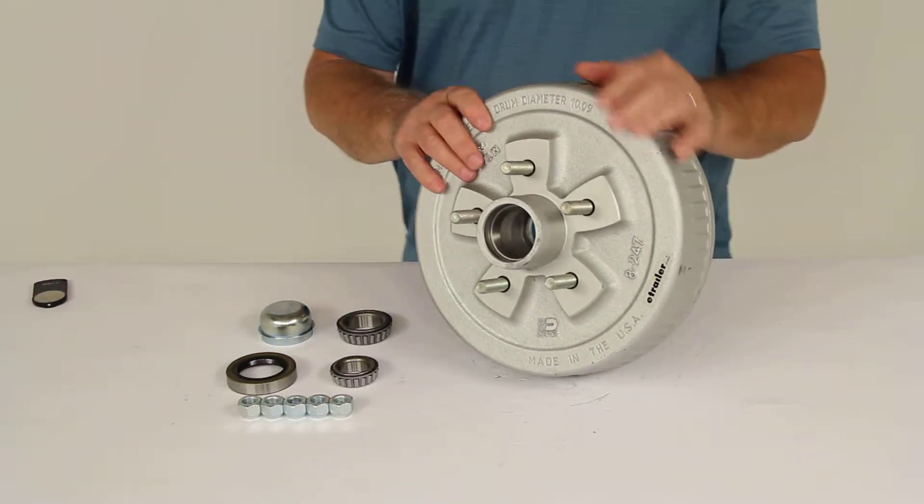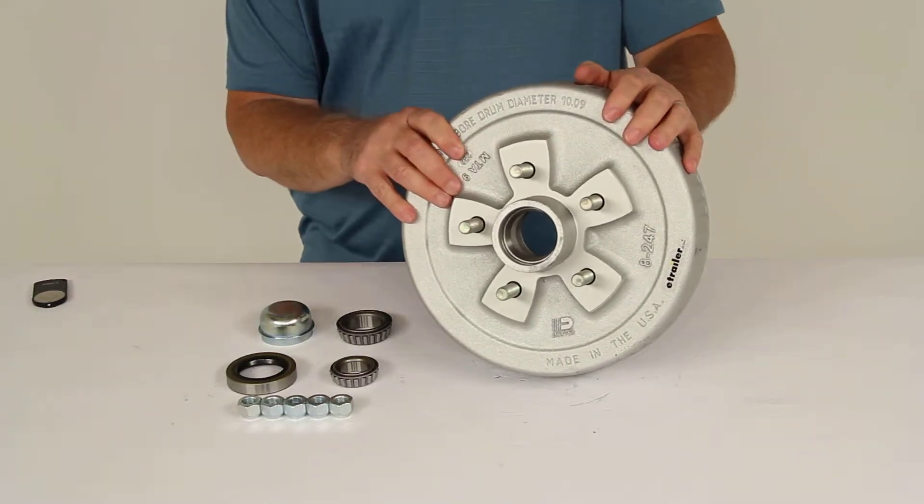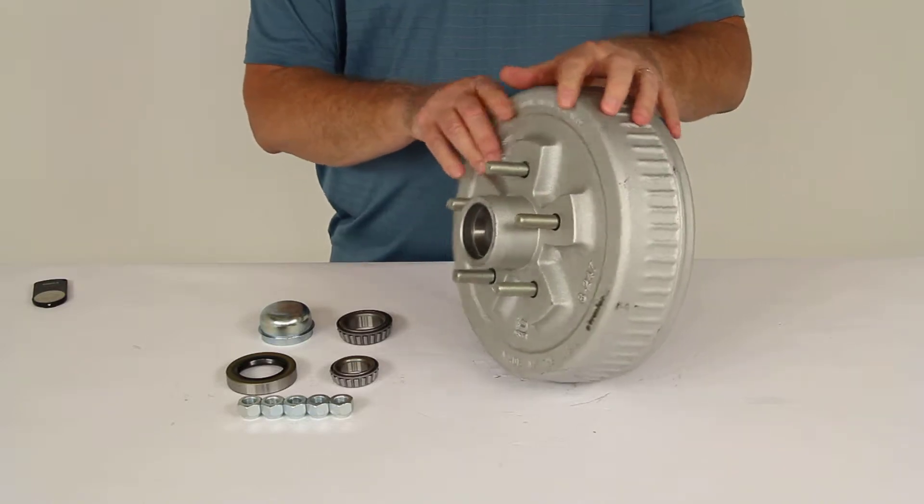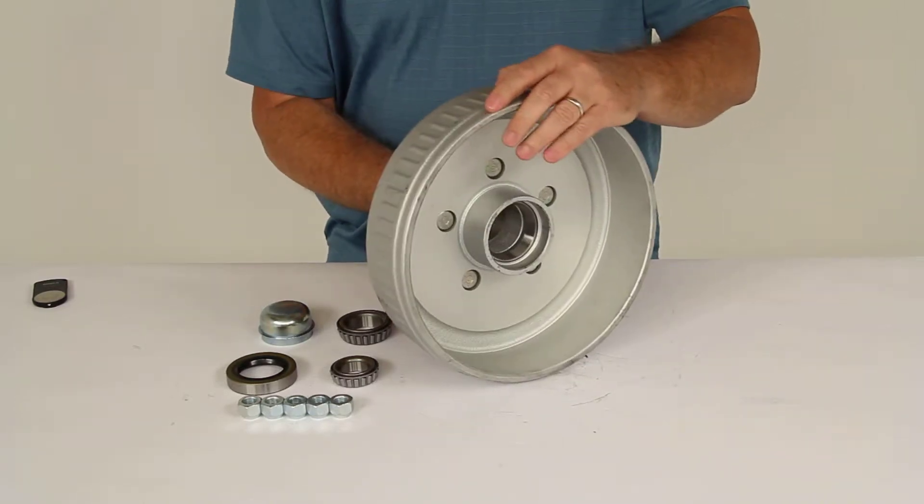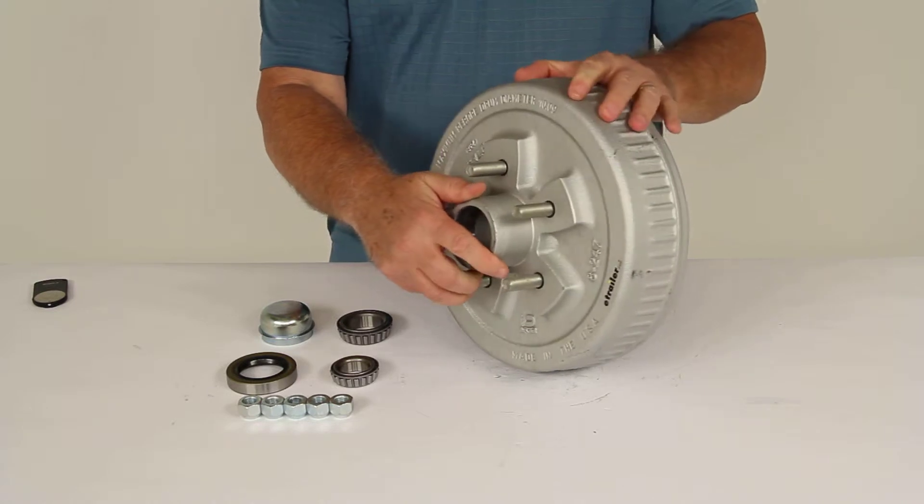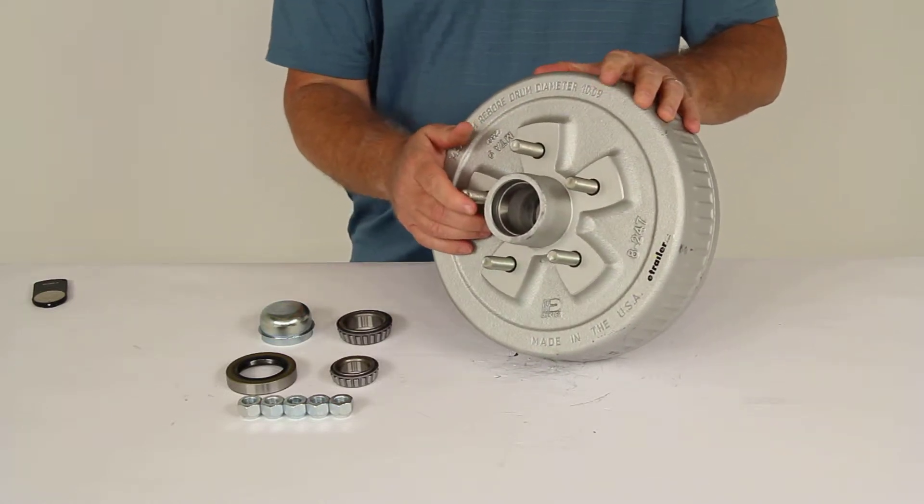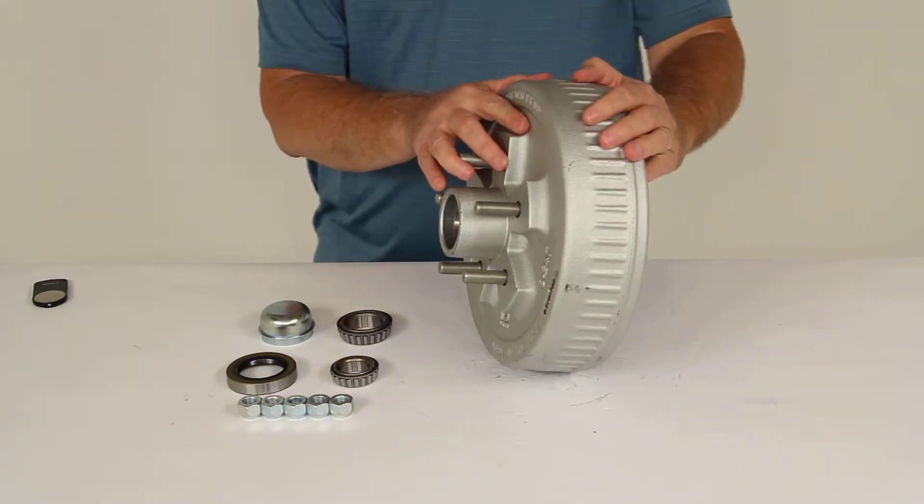Today we're going to review part number 8-247-50UC3. This is the Dexter 10-inch trailer hub and drum assembly for 3,500-pound axles. It has the 5-on-4-1/2-inch bolt pattern, and this one has a Galdex finish.